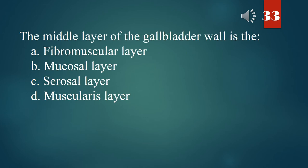The middle layer of the gallbladder wall is the: A. Fibromuscular layer. B. Mucosal layer. C. Serosal layer. D. Muscularis layer. The answer is A. Fibromuscular layer.